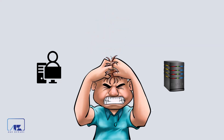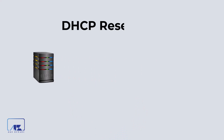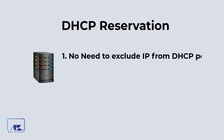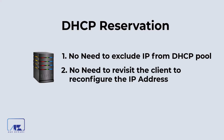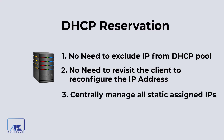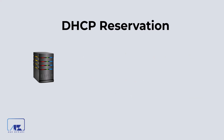As the number of computers with manual static IP addresses increases, it becomes very difficult to manage. A DHCP reservation is a method you can use to allocate static IP addresses from a pool to a designated client. The advantages are: one, you don't need to exclude any IP addresses from your pool; two, you will never need to revisit the computers to reconfigure the IP addresses; three, you can centrally control all your manually assigned IP addresses.